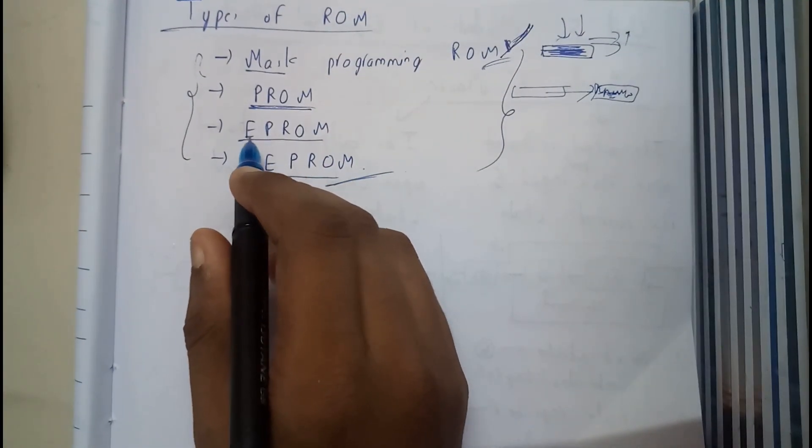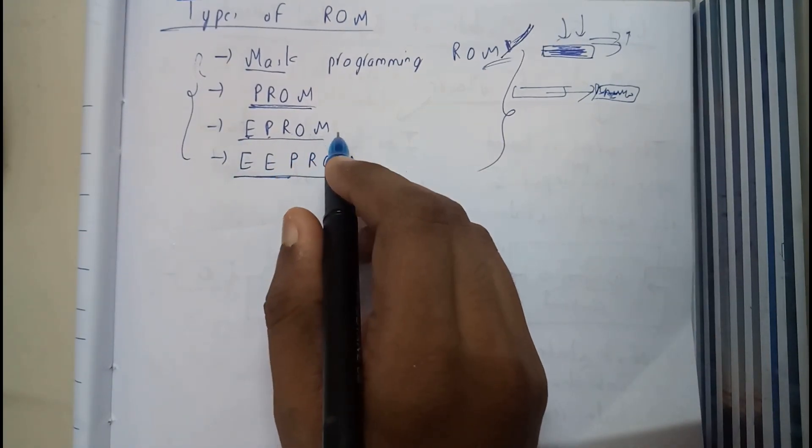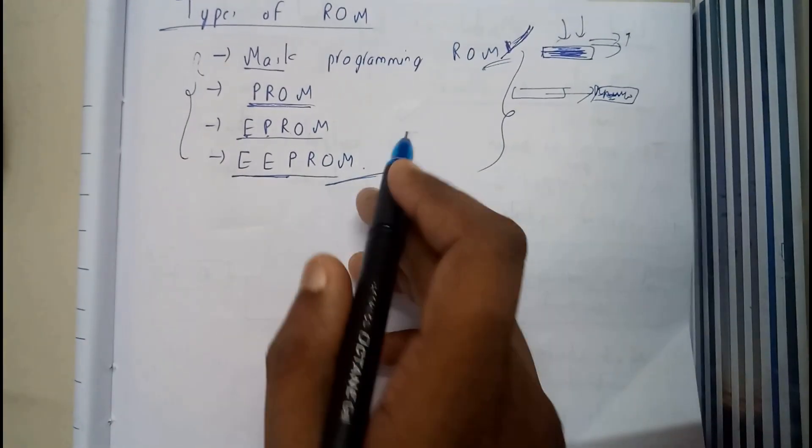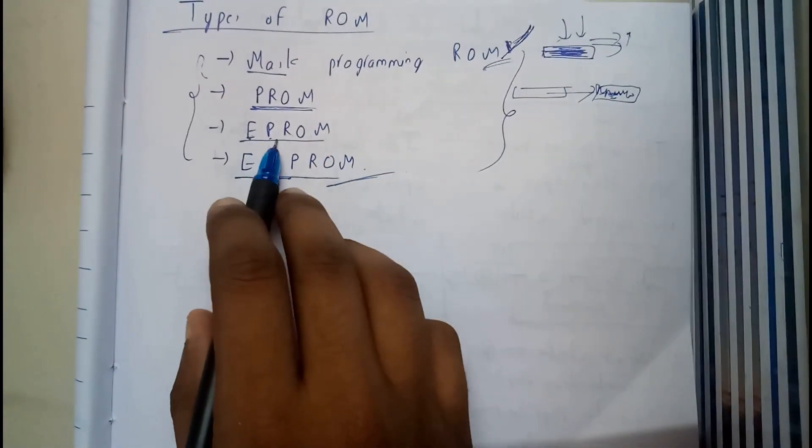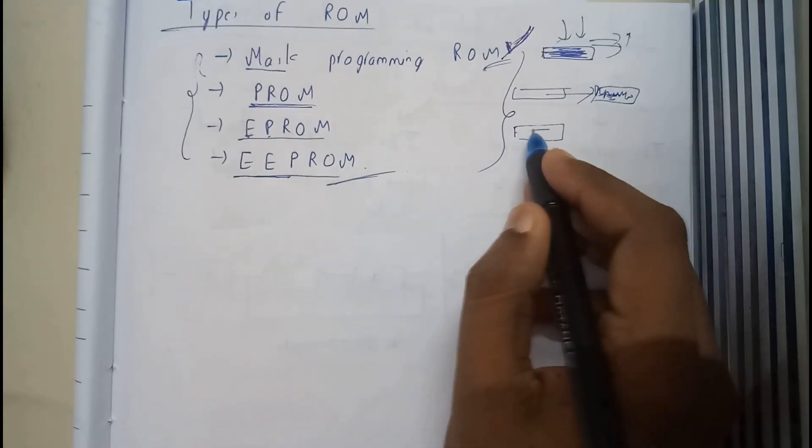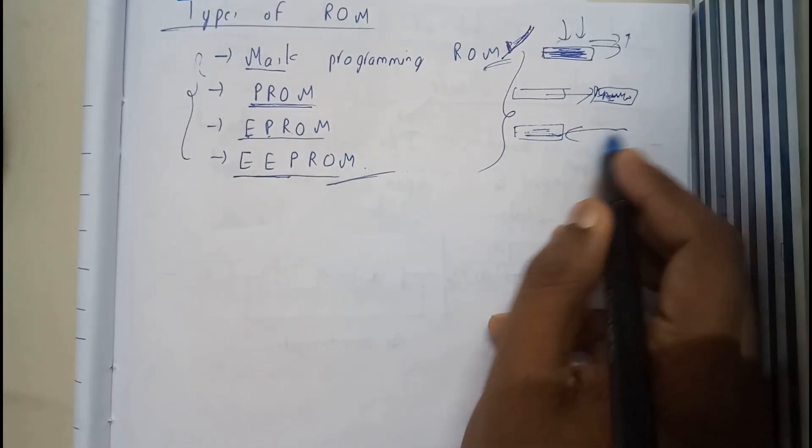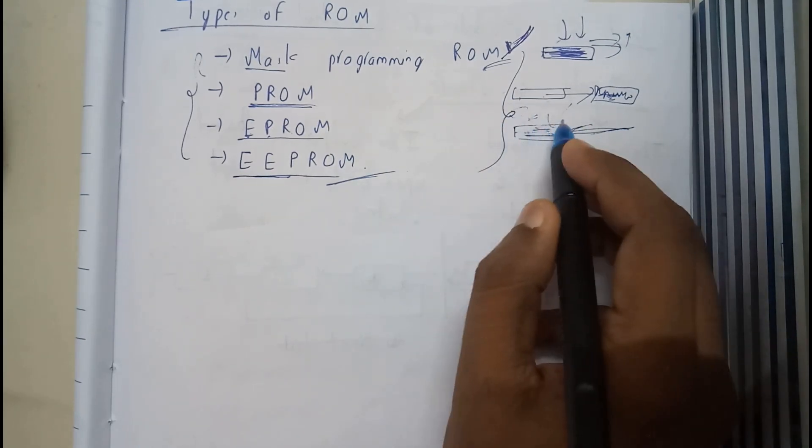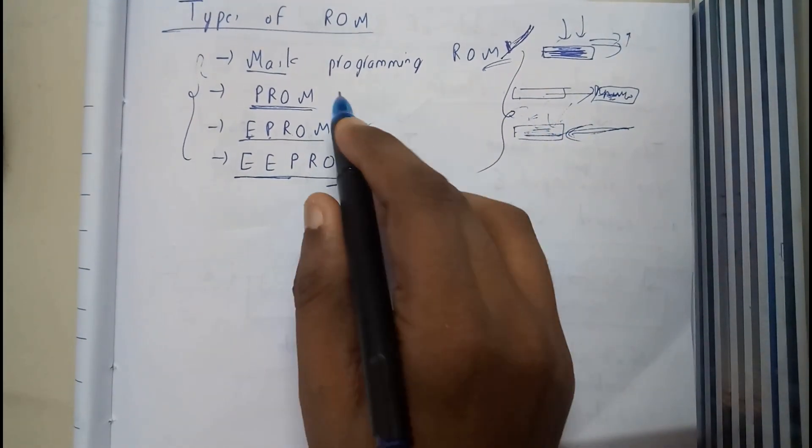Erasable programmable read-only memory - ROM means read-only memory. So if you program something on it, you can even erase it by applying UV rays.